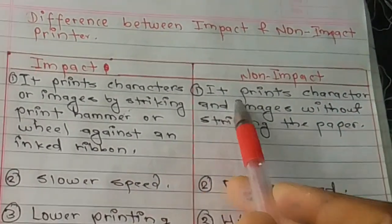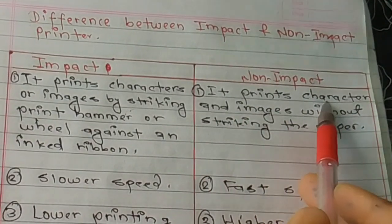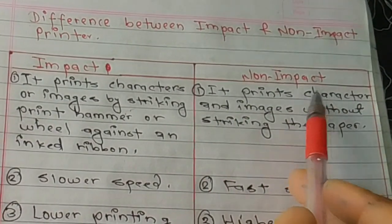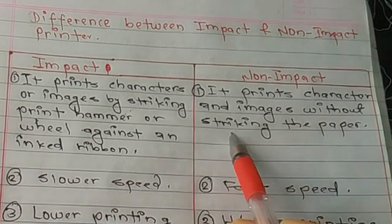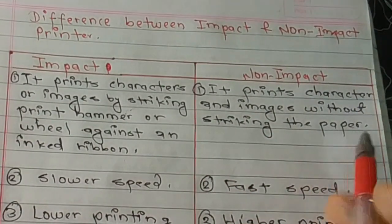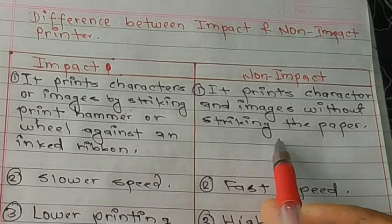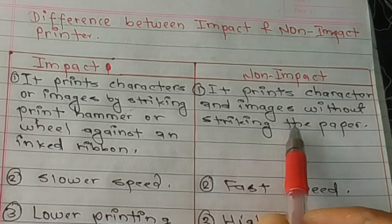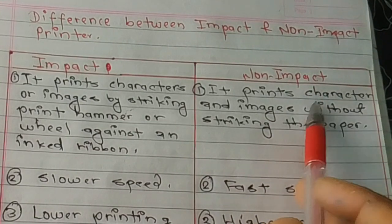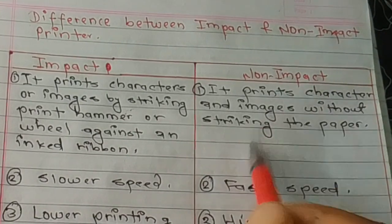A non-impact printer prints characters and images without striking the paper. It does not require a physical strike to produce characters and images.